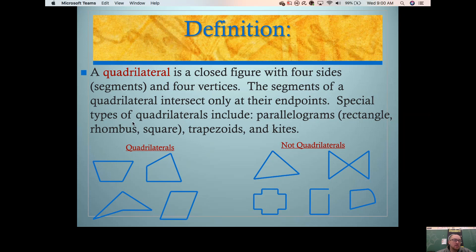There's types of quadrilaterals, like parallelograms. Parallelograms would be shapes like rectangles, rhombuses or rhombi, and squares. There's also trapezoids and kites, and we're going to talk about all of those shapes in our next video.